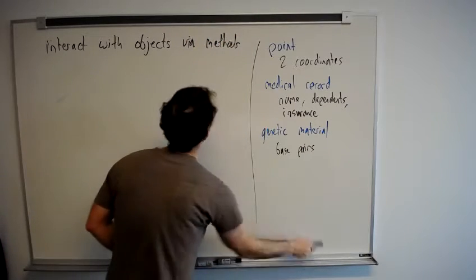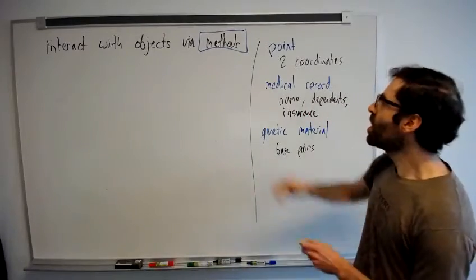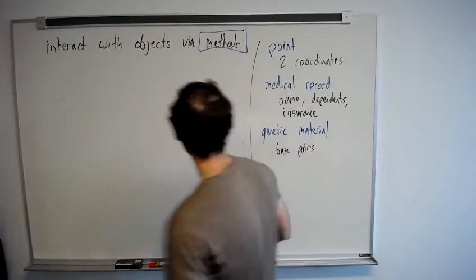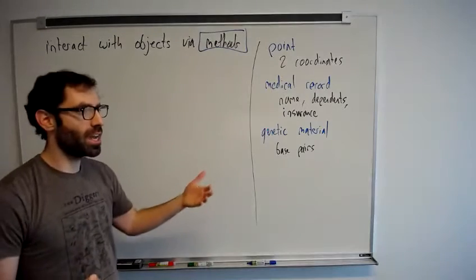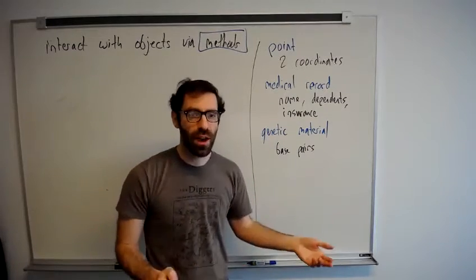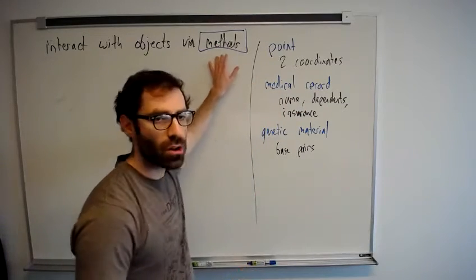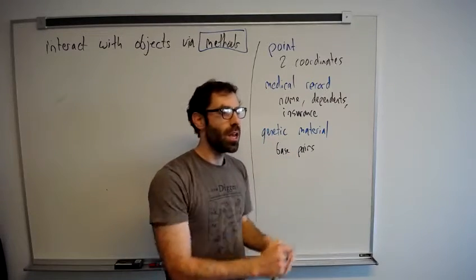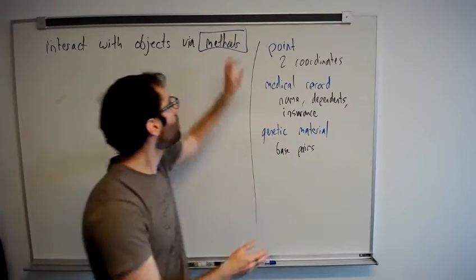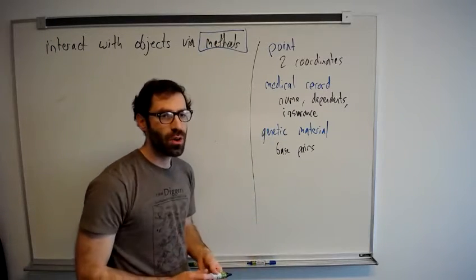We're going to interact with objects through methods. And methods are going to be like messages that we send to an object. Since methods are defined as functions, they take zero or more parameters, they may return a value, and they're called methods instead of functions because they are associated with a particular object. A function is usually a procedure that's defined independently, it stands on its own. A method is a procedure that's associated with a particular object.